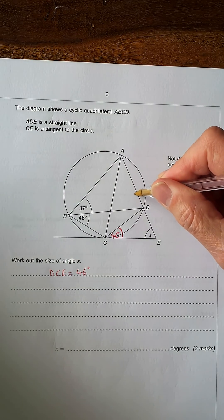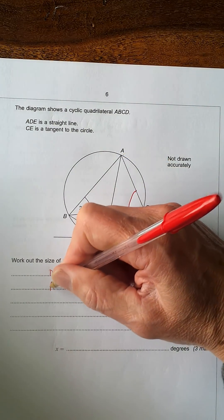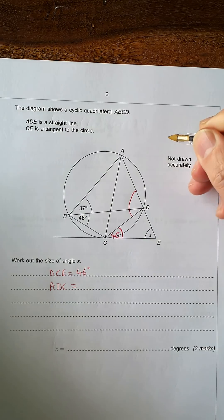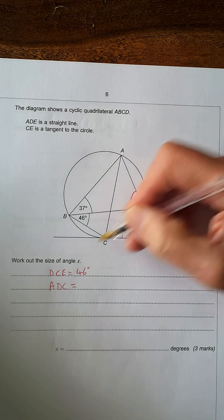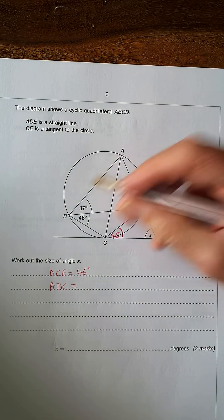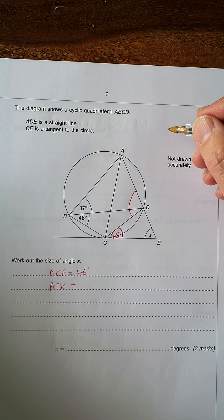Now let's have a look at this one here. That says ADC equals... Now this here, we have a quadrilateral inside the circle, so opposite angles in a cyclic quadrilateral add up to 180 degrees.